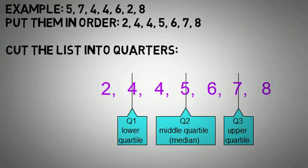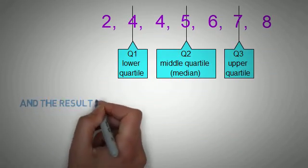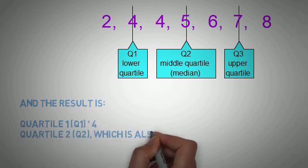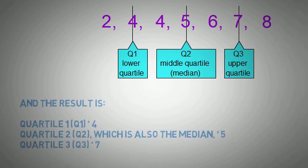Q2 is the middle quartile, which is the median of the numbers, and Q3 is the upper quartile at the 75th percentile. The results are: Q1 (first quartile) is 4, Q2 (second quartile, also the middle) is 5, and Q3 (third quartile) is 7. I think you now have a clear idea about quartiles.